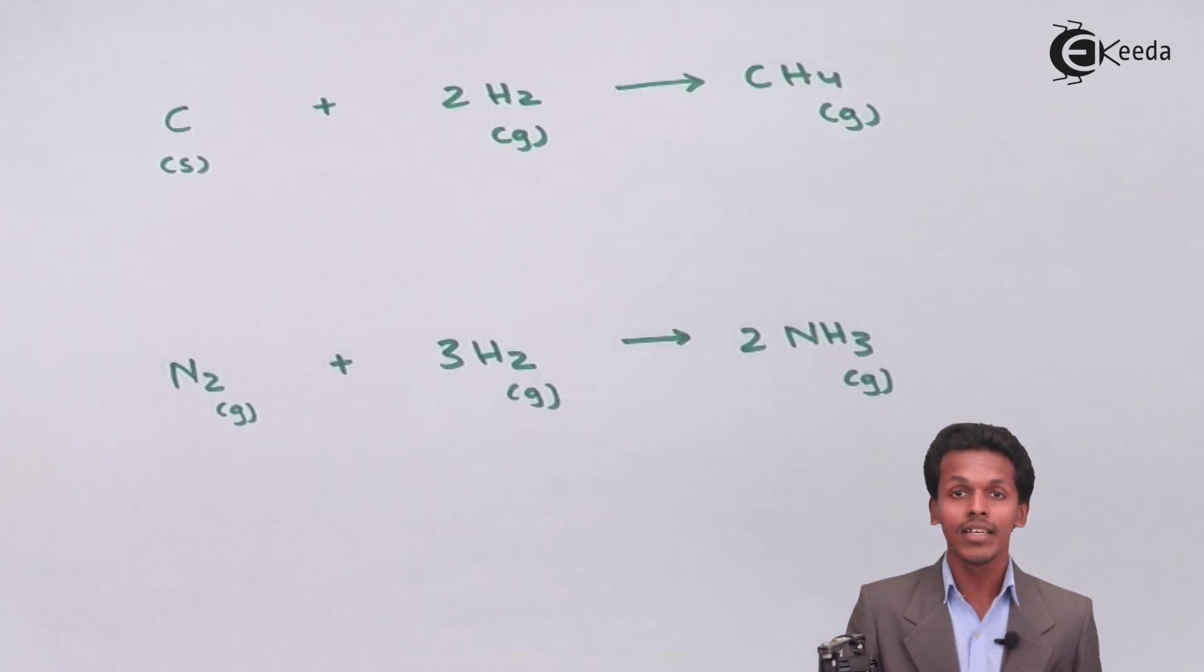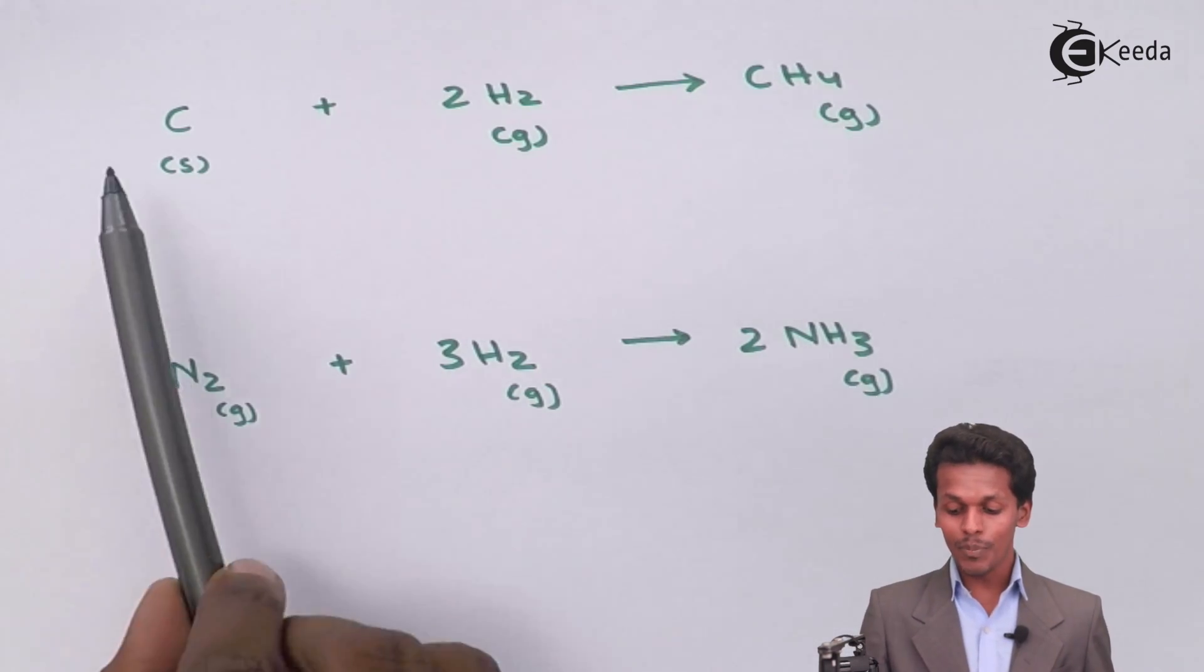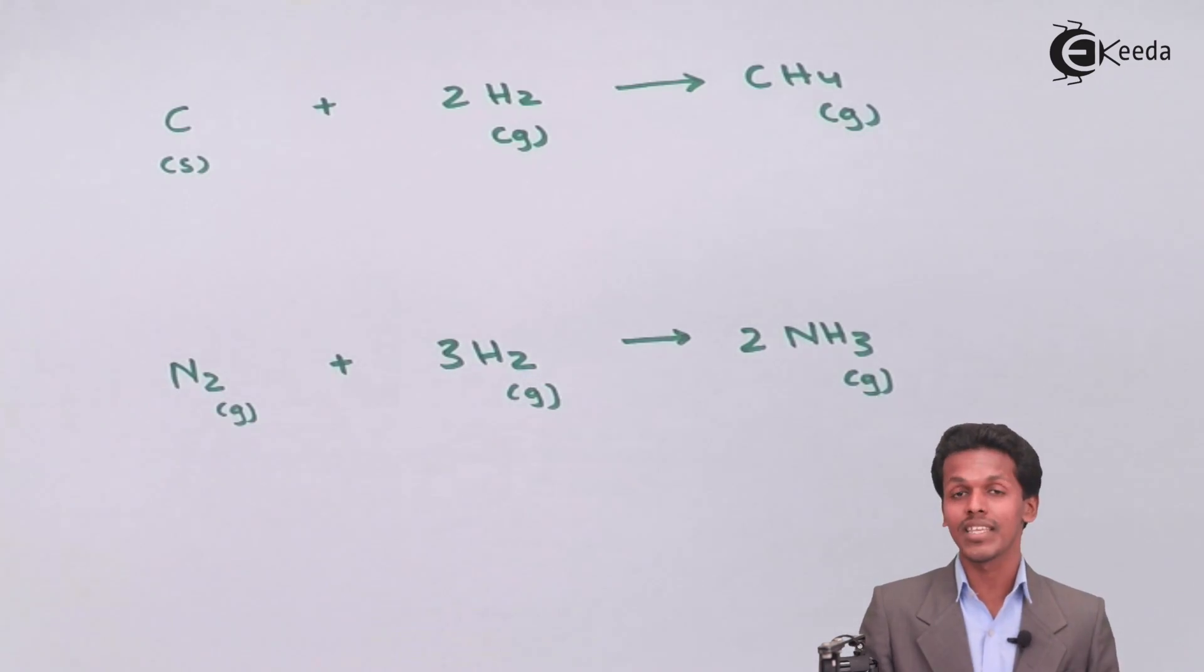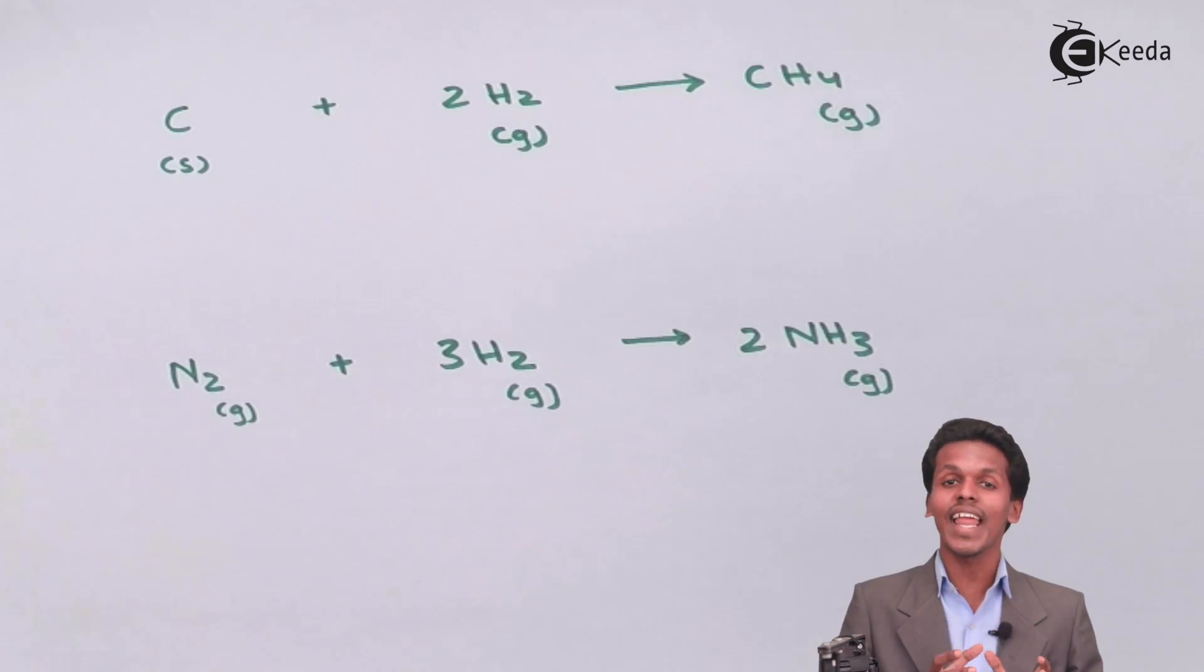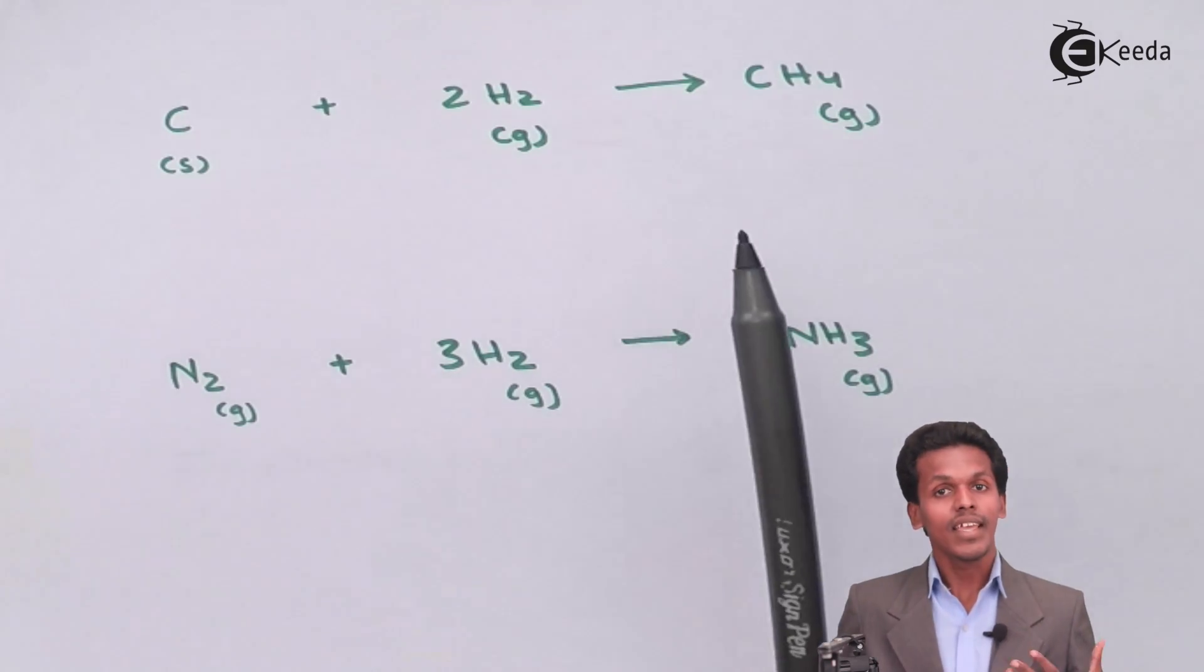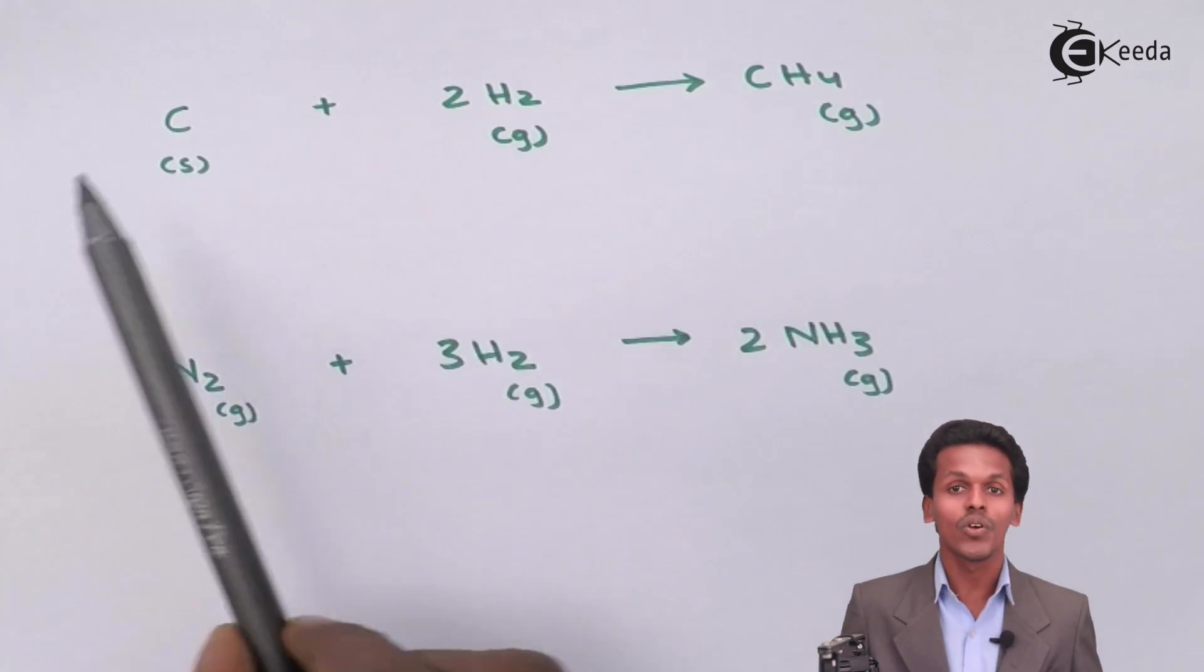Methane is basically an organic substance, while carbon and hydrogen are inorganic substances in which the properties are different. With the help of a chemical reaction, we can interact two different substances with each other and make a product which is different from both of them.